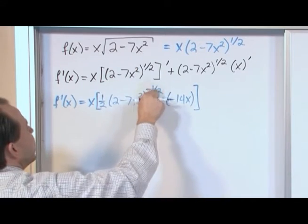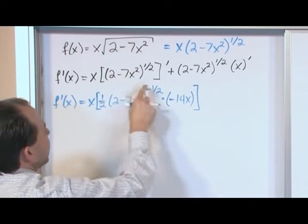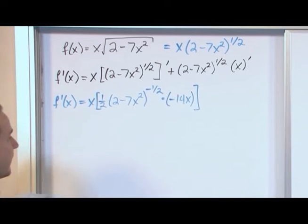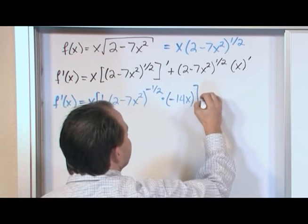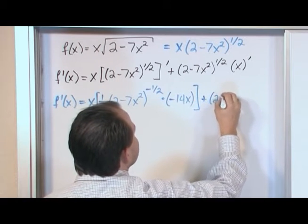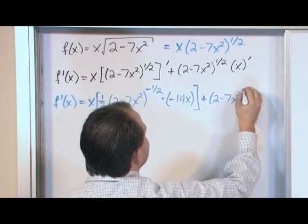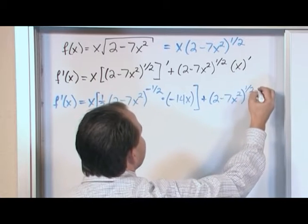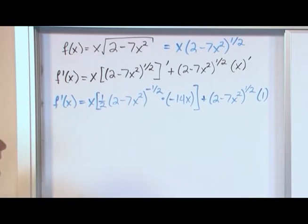So this is the derivative of this whole term. We have the outer guy with subtracting the exponent times the derivative of what we have in the middle. And then after we do that, we're going to have plus (2 minus 7x squared) to the 1/2. What's the derivative of x? Well, it's just 1. So that's very simple at the end.